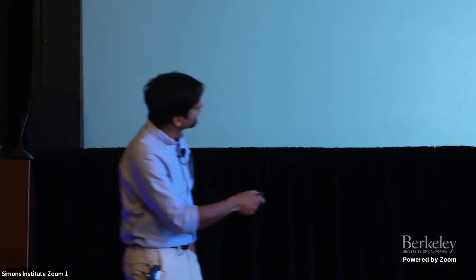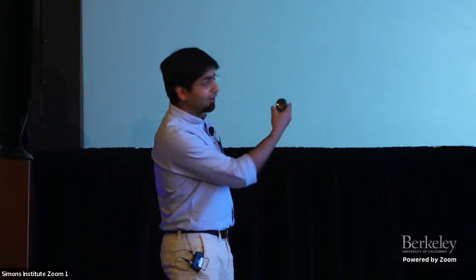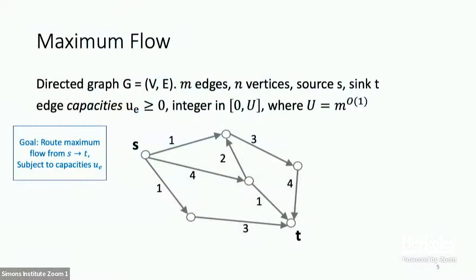Our setup is standard. You have a directed graph with m edges, n vertices, two special vertices — a source s and a sink t. Every edge has a non-negative capacity u_e. For the purposes of this talk, I'll assume it's an integer bounded between zero and a polynomial in m, with U as an upper bound on these capacities. Our goal is to send as much flow from the source s to the sink t.